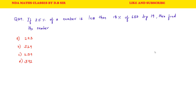Question 39: If 25 percent of a number is less than 18 percent of 650 by 19, then find the number. So let the number be x. 18 percent of 650 means 18 upon 100 into 650. This gives us 90. And 25 percent of the number means 1 fourth of the number. So 1 fourth of the number equals 90.